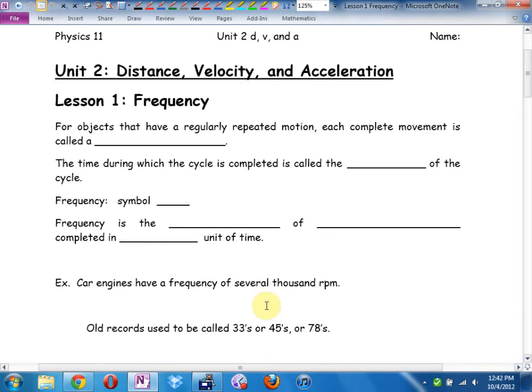For objects that have a regularly repeated motion, each complete movement is called a cycle. The time for one cycle is called the period of the cycle. Let me give you an example. How many have been on a swing set before? One cycle would be to the top, back, and back to where you started from. A cycle is when you get back to where you started from.